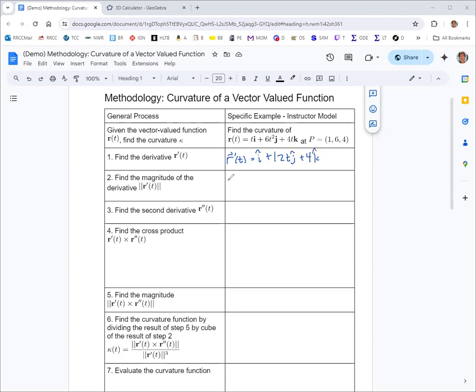Now, finding the magnitude of that derivative, we take the square root of the sum of the squares of the components. The first component is 1, the second is 12t, and the third is 4. 1 squared is 1, 4 squared is 16, so that gives 17, plus 144t². We simplify that to √(144t² + 17).